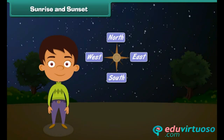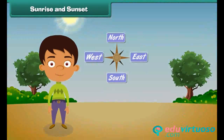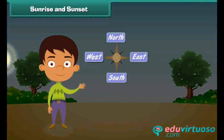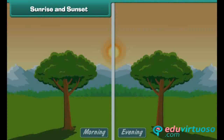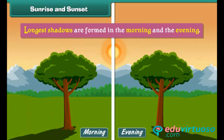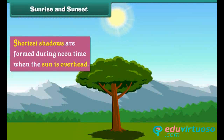The sun rises in the east and sets in the west. At noon it is right over our heads. Longest shadows are formed in the morning and the evening. Shortest shadows are formed during noon time when the sun is overhead.